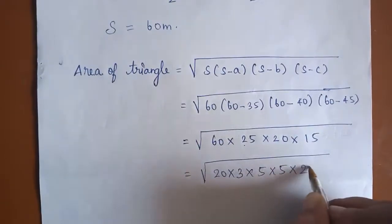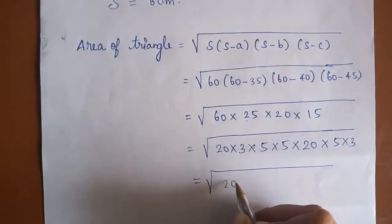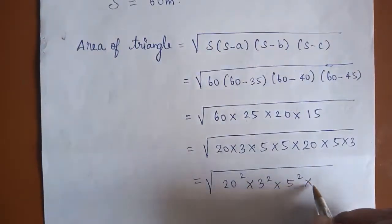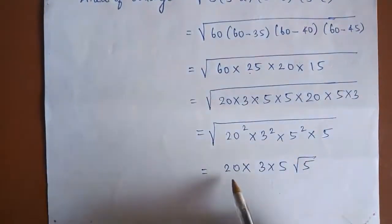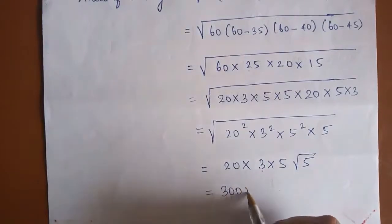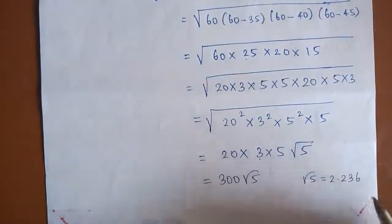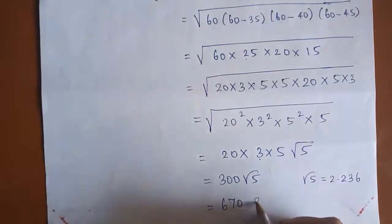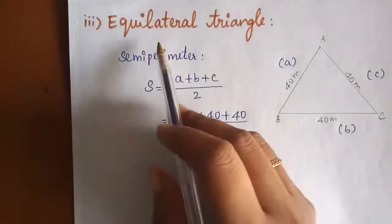Continuing: root of 60 × 25 × 20 × 15 = root of 20² × 3² × 5² × 5 = 20 × 3 × 5 × root 5 = 300√5. Using √5 = 2.236, the area is 300 × 2.236 = 670.8 square metres. Therefore, the area of the acute-angled triangle is 670.8 square metres.